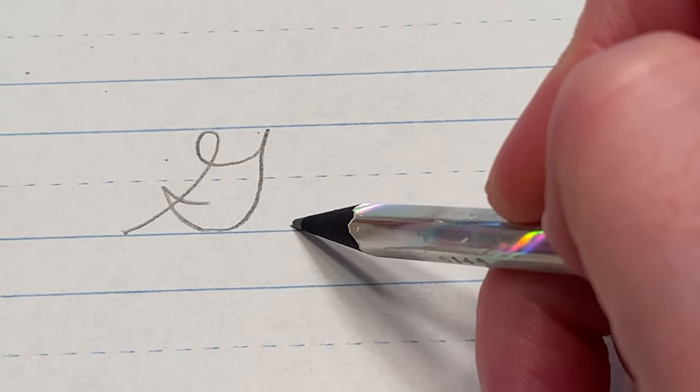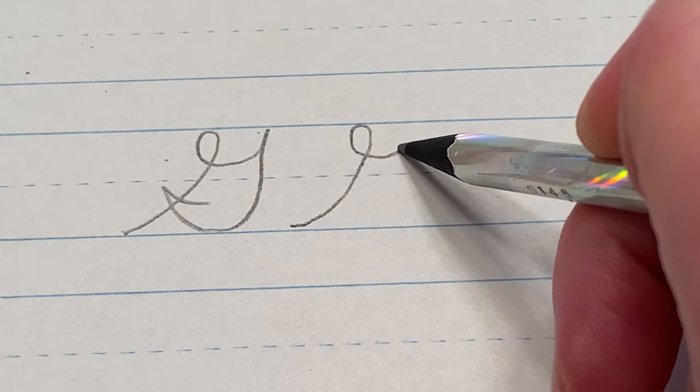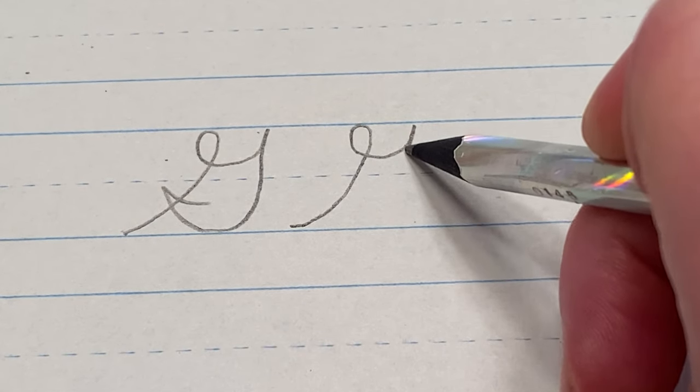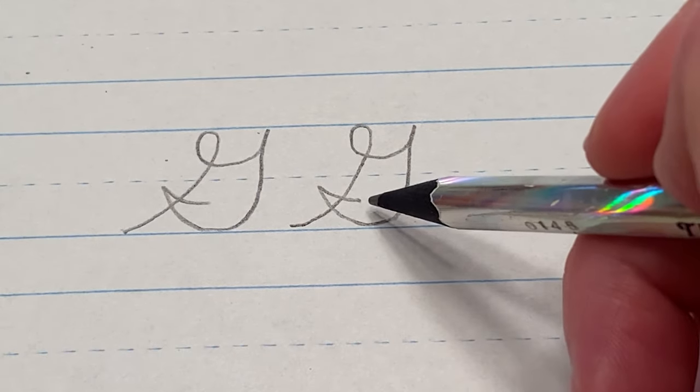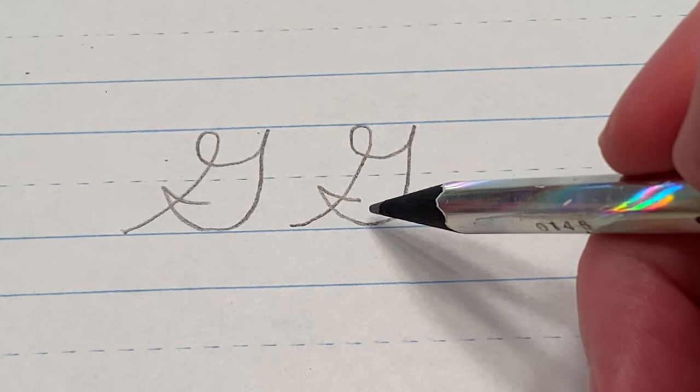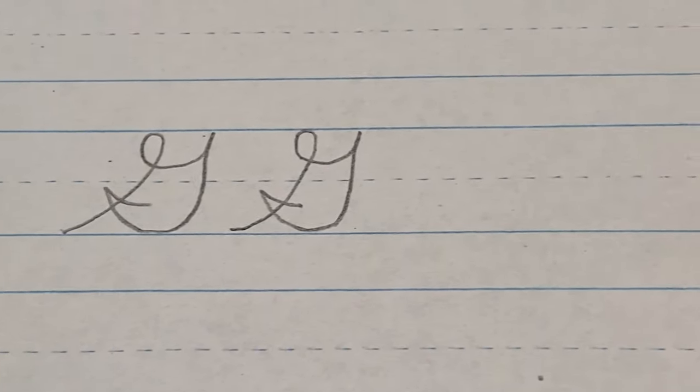So again you start at the floor, up to the ceiling, loop to the left, point up to the right, back and hook. You'll recognize the hook if you've worked on the B or the F. This is another letter that doesn't attach to other letters.